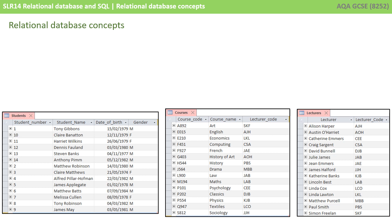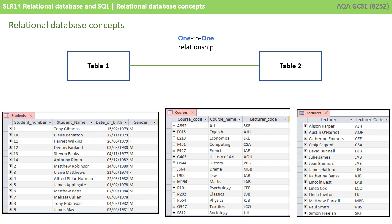With relational databases, the relationships we create between the separate tables have specific notation and meaning. Two tables can be linked together in one of three different relationships. We can have a one-to-one relationship where one entry in one table has a single entry in the other table and vice versa. We can also have one-to-many relationships where a single row, record, or entry in one table relates to many entries in the other.